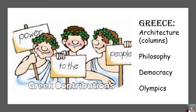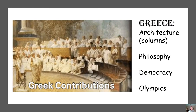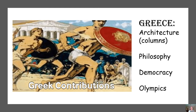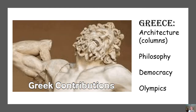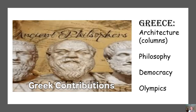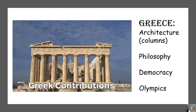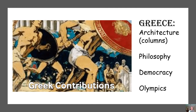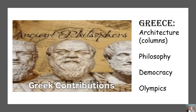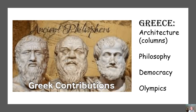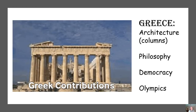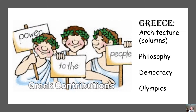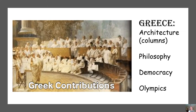Greeks had many contributions, which is why they're considered a classical society. The Olympics began in Greece. The architecture of Greece, specifically columns, are still used today — if you go to many libraries and governmental buildings, they'll have that ancient Greek look. The artwork, sculptures, philosophers, and democracy are a few of the major contributions of ancient Greece.